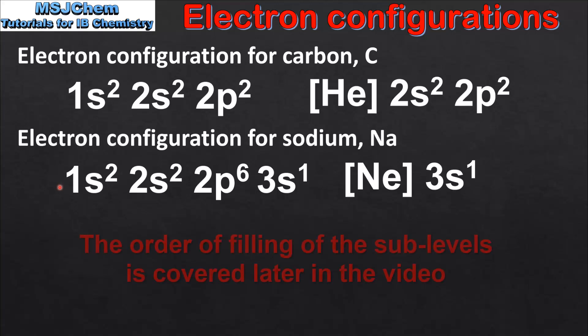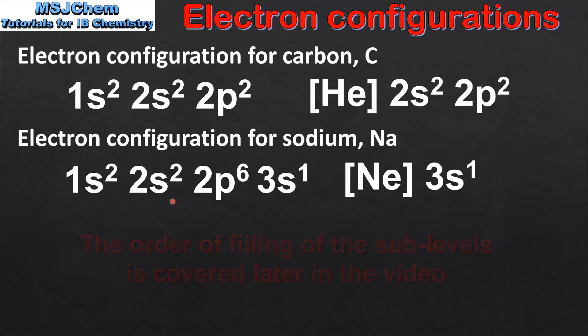Next we have the electron configuration for sodium, which is 1s2, 2s2, 2p6, 3s1. This tells us that an atom of sodium has 11 electrons, with 2 electrons in the 1s sublevel, 2 in the 2s sublevel, 6 in the 2p sublevel, and 1 in the 3s sublevel.